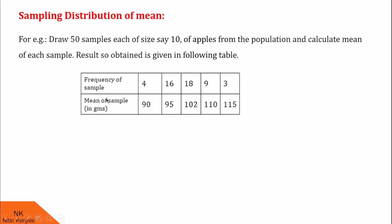This is the table. Here we are given the frequency of the samples. So here there are 4 samples, 16 samples, 18, 9, and 3 samples. In the next row we are given means of these samples.